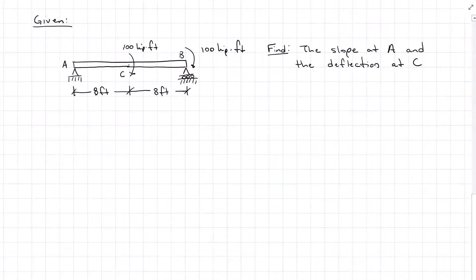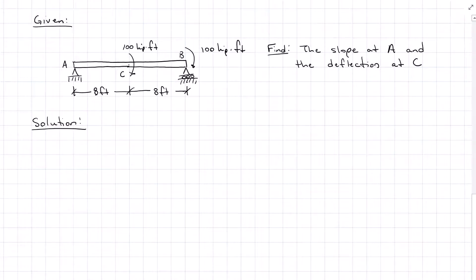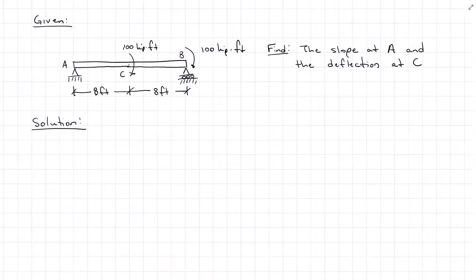We've seen this beam before in the moment area method. It's simply supported with two 100 kip-foot moments applied, and we want to find the slope at A and the deflection at C. This time we're going to use the conjugate beam method. We need two things: first, the conjugate beam where reactions are replaced with slopes and deflections, and second, we load that conjugate beam with the moment diagram. From the moment area method lecture, we know what the moment diagram looks like, so now I can draw my conjugate beam.